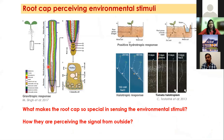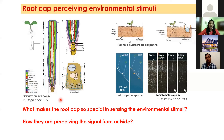Root cap is an organ which is present at the very end of the root, consisting of the columella cells and the lateral root cap. When a plant root is growing in the soil, it is basically penetrating into the soil, and it is this root cap region which is exposed to external conditions first. The root cap is a fantastic organ to study in terms of development as well as physiology, and it is already known to have some role in many tropic responses.